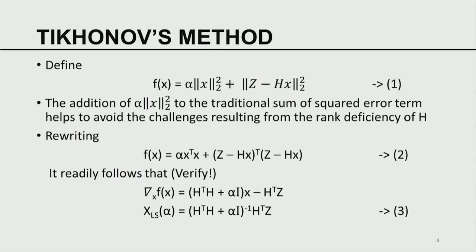This method is meant to get around the rank deficiency of H. It is a very simple, elegant method to approximate solutions of ill-posed, rank-deficient problems — I am using those terms synonymously. So what is the Tikhonov method? It is a modification of the method used in solving the underdetermined case. In the underdetermined case we seek to minimize the norm of X but require Z minus HX to be a strong constraint using a Lagrangian multiplier.